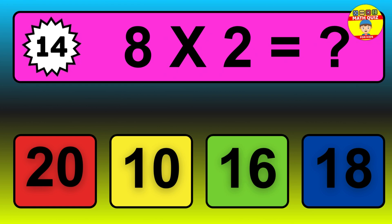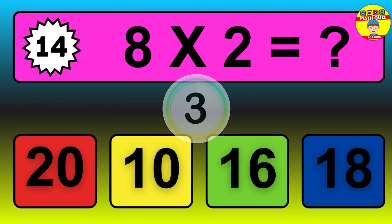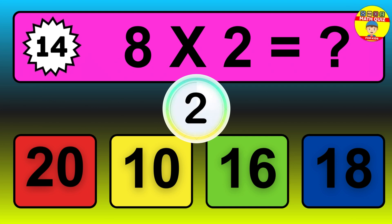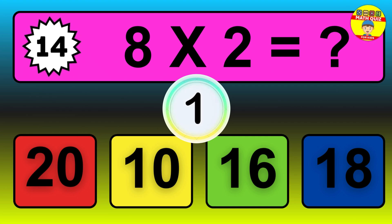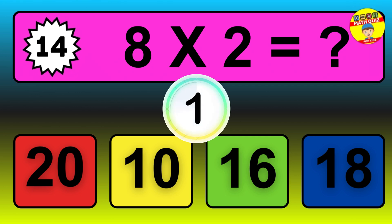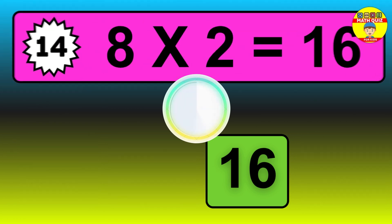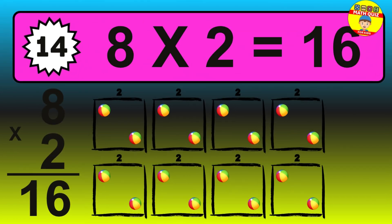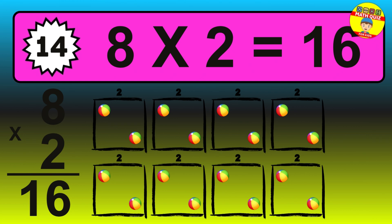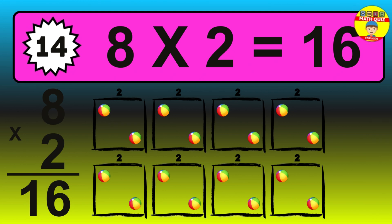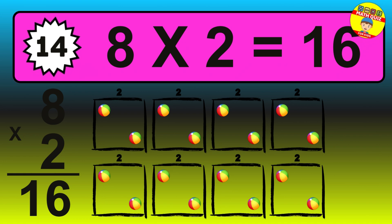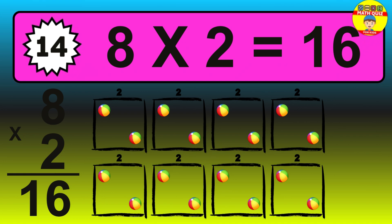Question 14. 8 times 2 equals what? The answer is 8 times 2 is 16. To calculate, we have 8 groups with 2 balls each one. So, how many balls do we have? 16 balls.